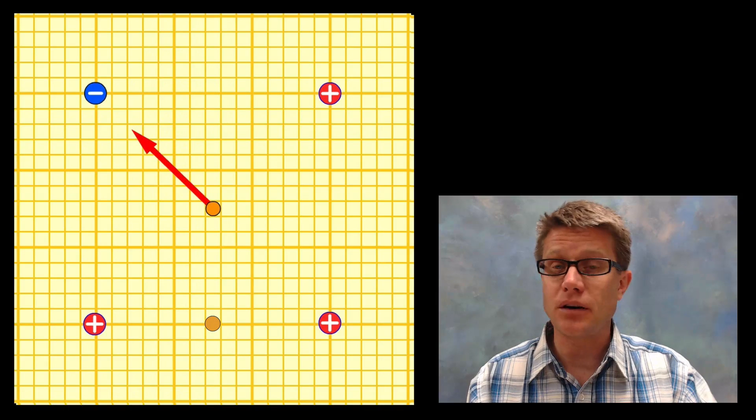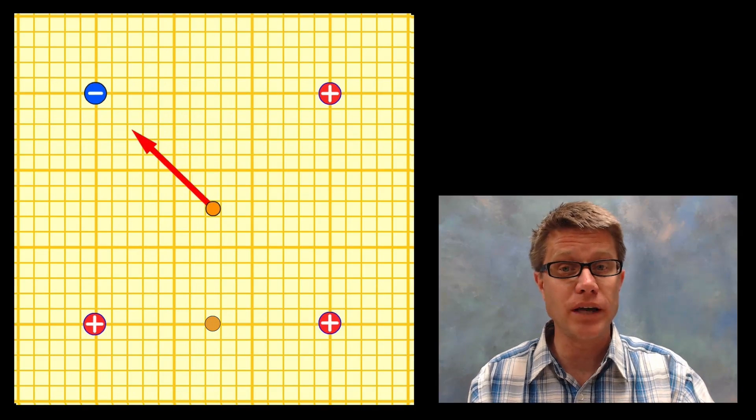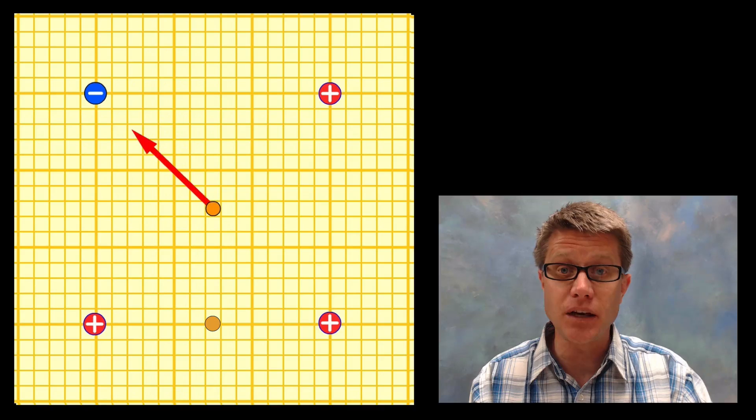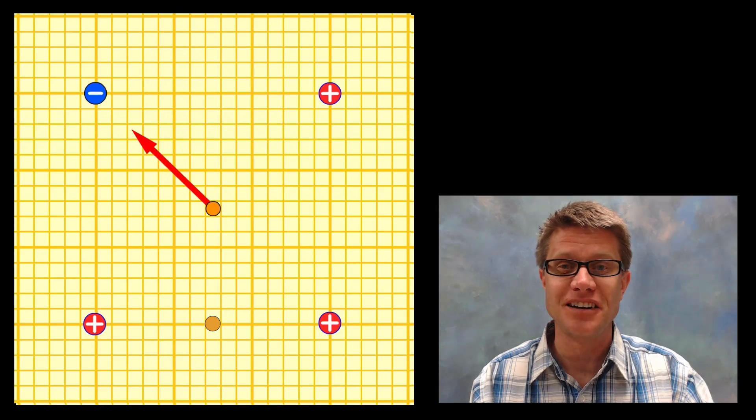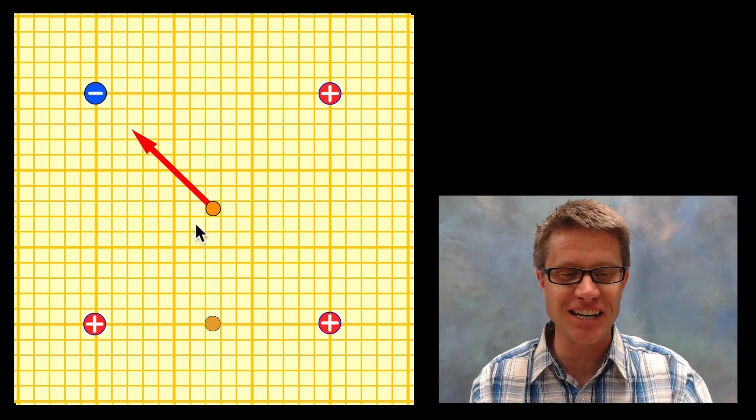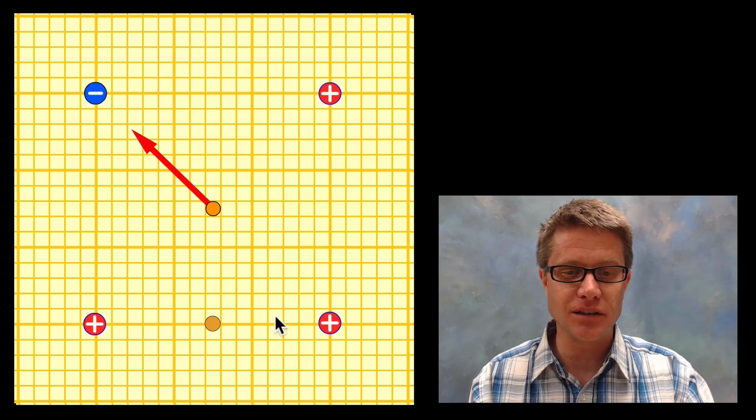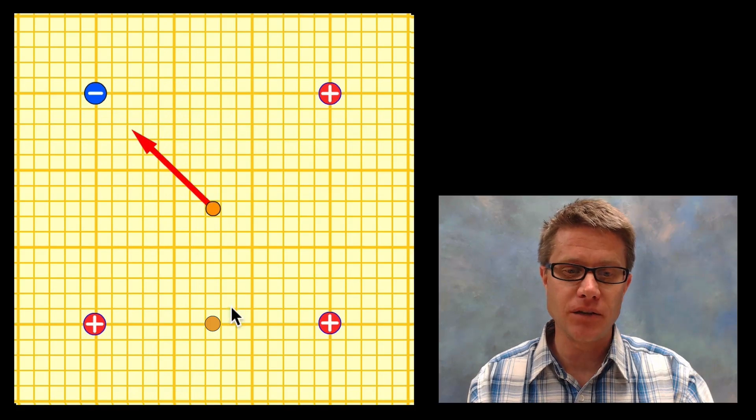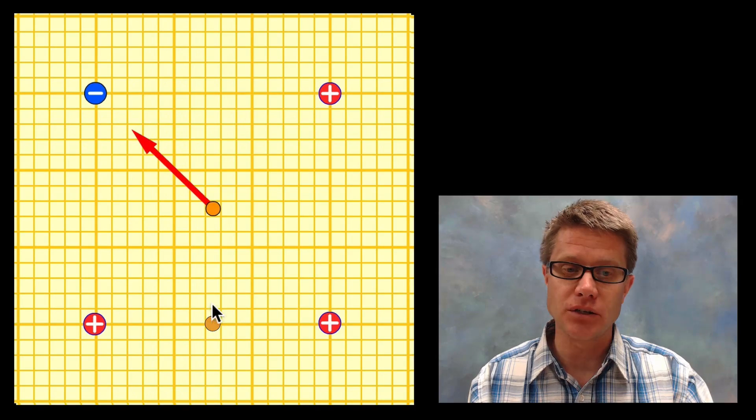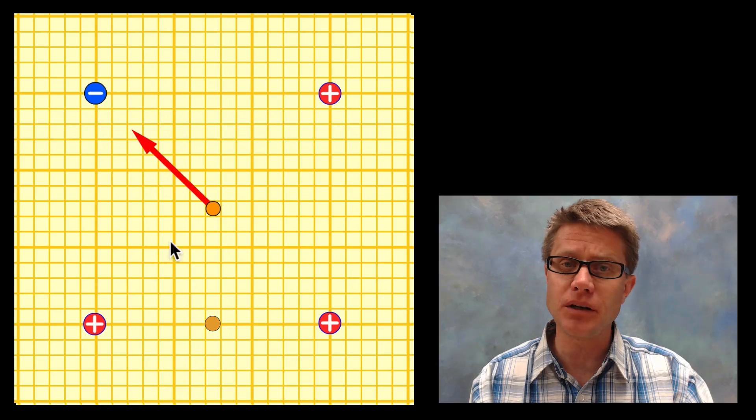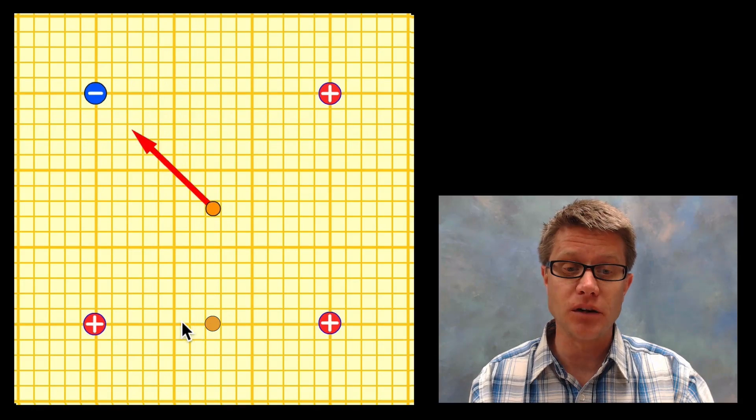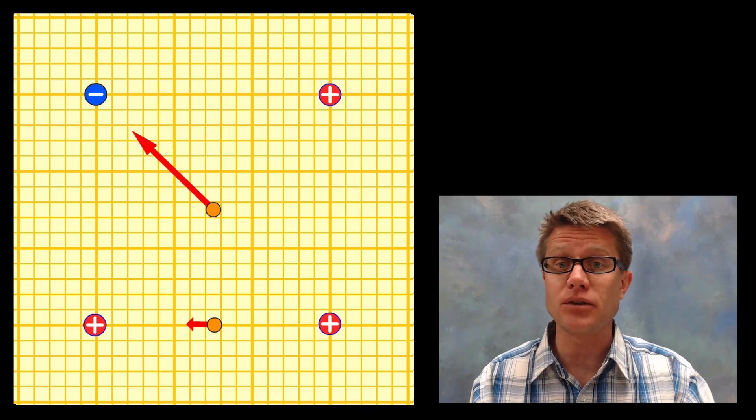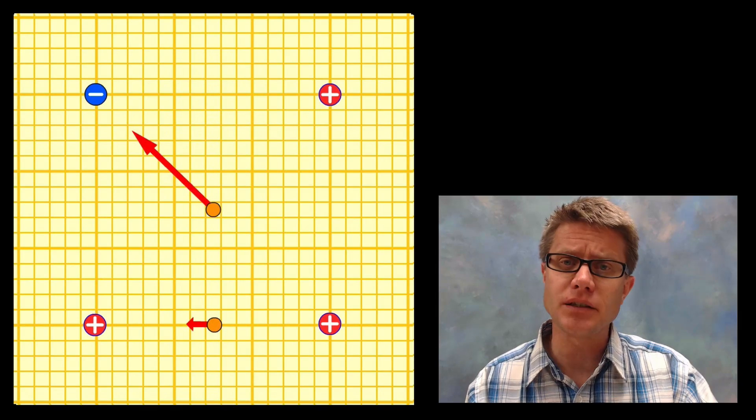What if we were to put a point down here? Could you figure out which way it's going to point? You can pause the video before I show you the answer. But if we look right here, these two are kind of canceling each other out. This positive is pushing away in this direction. This negative is pulling in that direction, but since it's farther away here than it was here, we'd have a smaller arrow that's going to be pointed in that direction. We can actually make this quantitative as well.